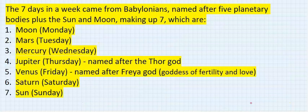The seven days in a week came from Babylon, named after five planetary bodies plus the sun and the moon, making up seven, which are: Moon for Monday, Mars for Tuesday, Mercury for Wednesday.